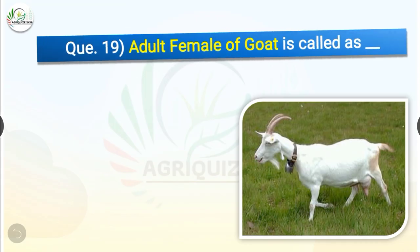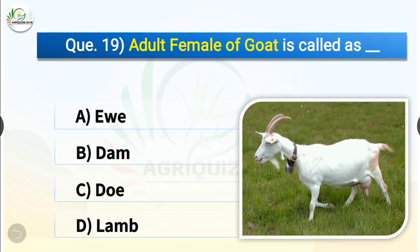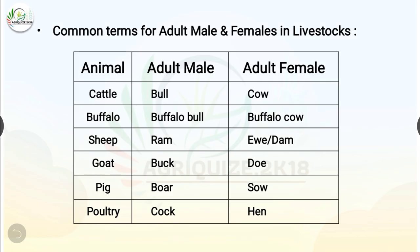Question number 19. Adult female of goat is called as dash. The options are ewe, dam, doe or lamb. The correct answer is option C, doe. So the adult female of goat is called doe. In cattle: adult male is bull, adult female is cow. In buffalo: adult male is buffalo bull, adult female is buffalo cow. In sheep: male is ram, female is ewe or dam. In goat: adult male is buck, adult female is doe. In pig: adult male is boar, adult female is sow. In poultry: adult male is cock, adult female is hen.